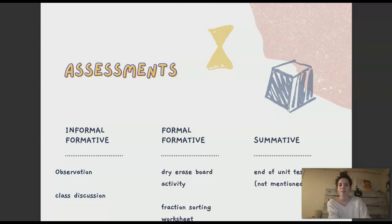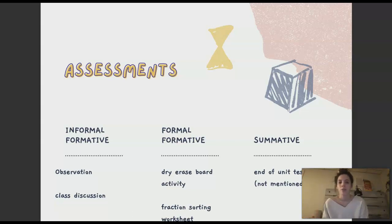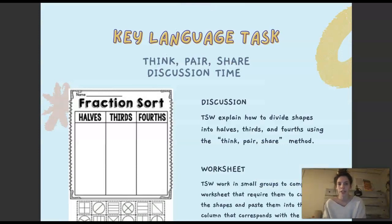For my assessments, I had a little bit of everything. Informal formative: observation and class discussion — I find that students learn a lot from class discussion, so I definitely wanted to incorporate that. Formal formative: a dry erase board activity and the fraction sorting worksheet they do in small groups. The summative assessment I didn't really include in my lesson plan, but obviously at the end of the whole unit you would have a test. The key language task was think-pair-share and discussion time for the worksheet, along with talking before the worksheet to help students understand the material. I also included a photo of my fraction worksheet.